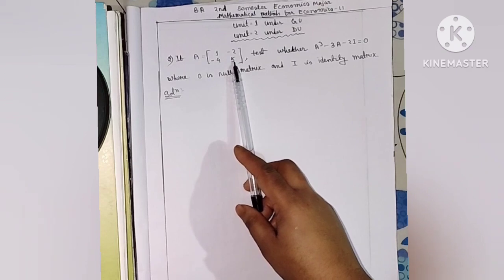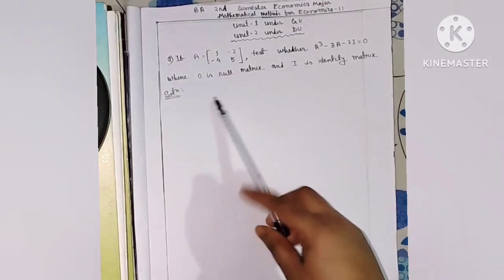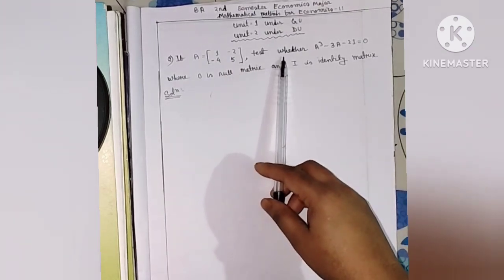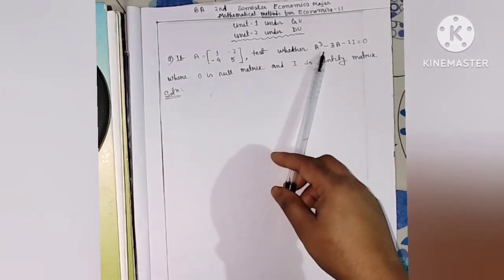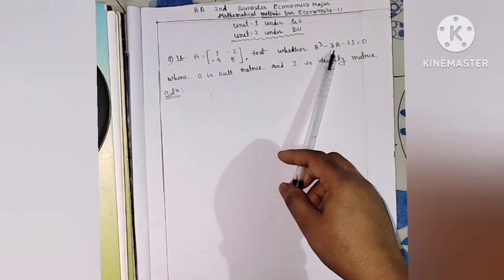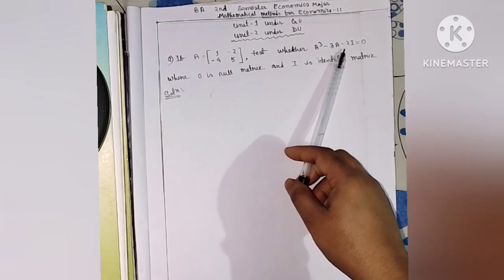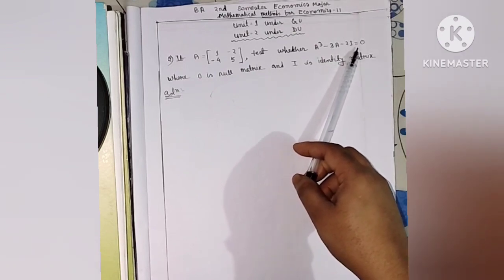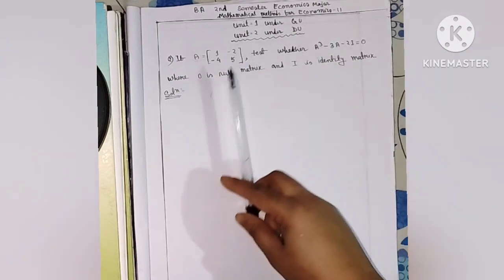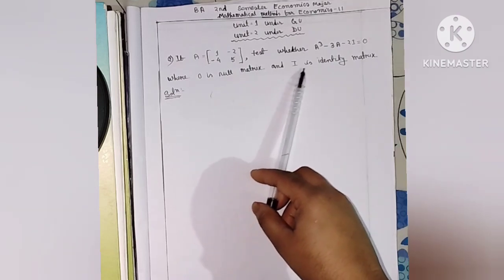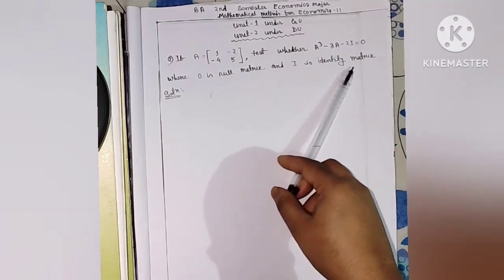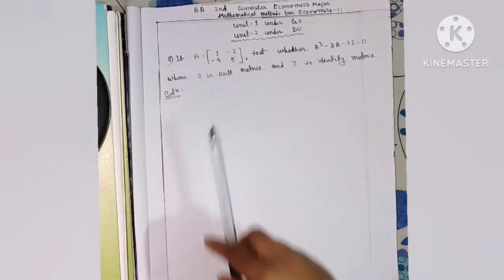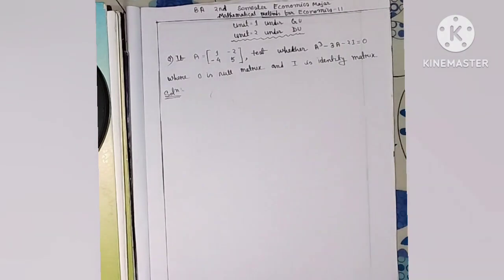This is a 2×2 dimension matrix. Test whether A cubed minus twice A equals twice I, where O is a null matrix and I is the identity matrix.